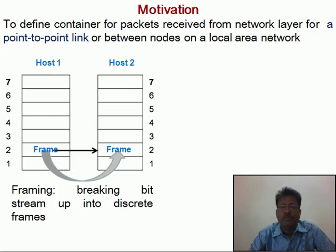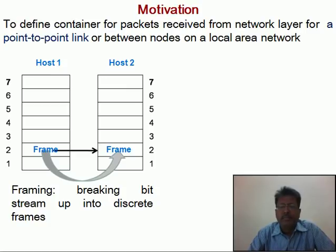The figure shows host1 and host2 as a sender and receiver. The responsibility of the data link layer is to collect the packets from the network layer and to convert them into frames according to the specifications of the underlying physical layer technology. Framing is breaking a bit stream of packets into discrete frames as per the specifications of the physical layer technology.